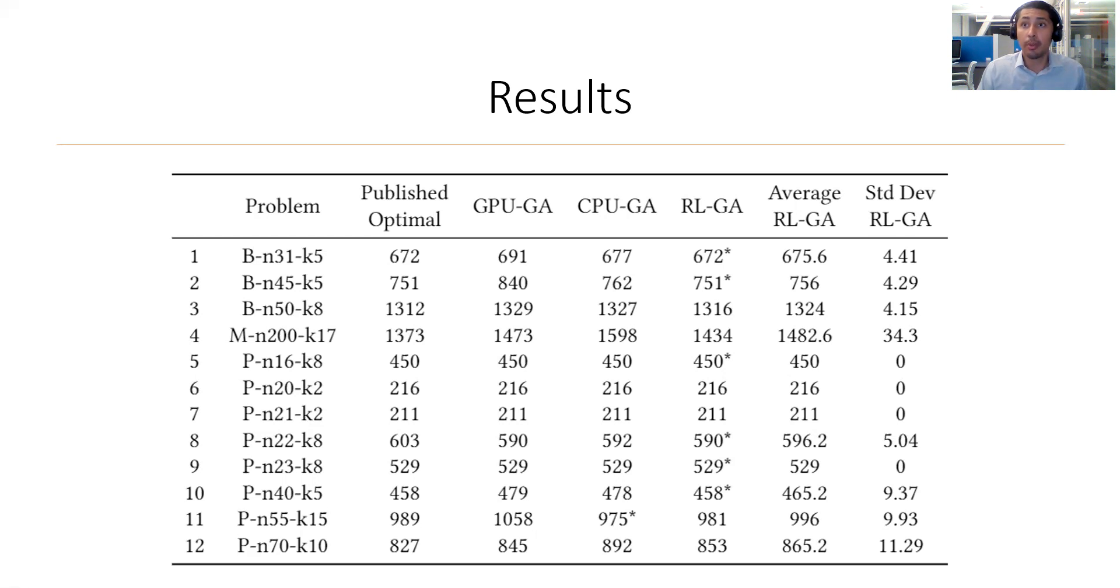As can be seen from the table, the proposed approach shows equal or better performance to that of the static hyperparameter CPU and GPU-based genetic algorithms for 11 of the 12 problems. For problem 8, all the genetic algorithm implementations have improved the best known solution and for problem 11, the CPU genetic algorithm finds a better solution than the best known solution. The average results also demonstrate equal or better performance than the static GPU-based genetic algorithm, showing its consistency.